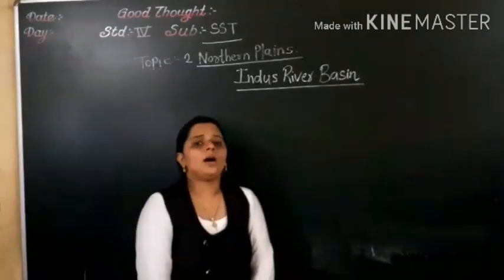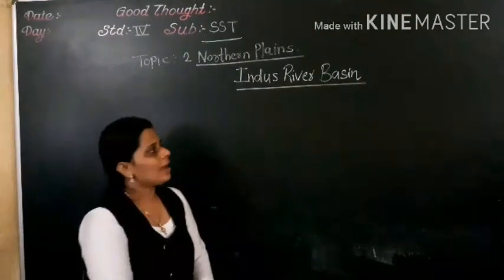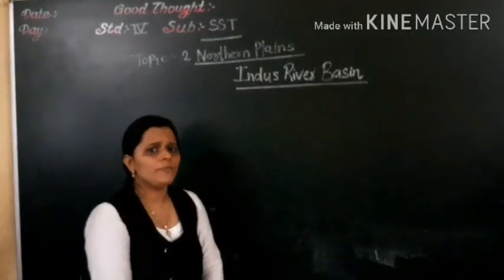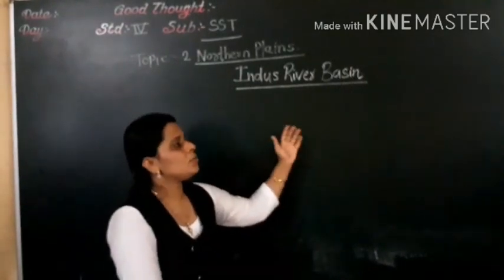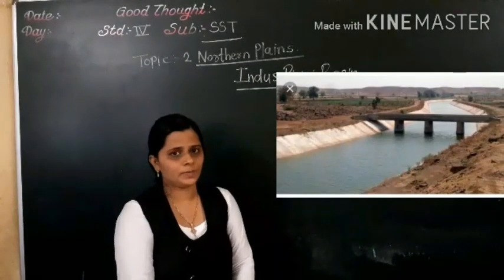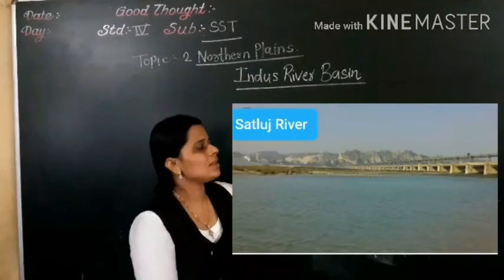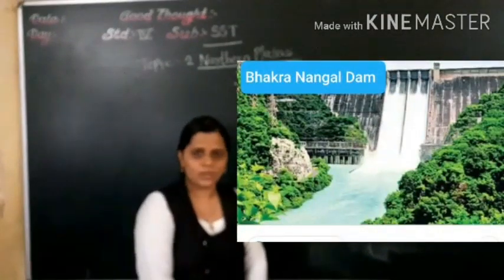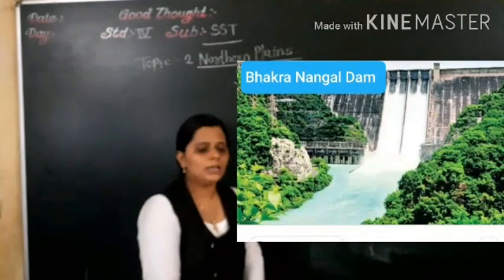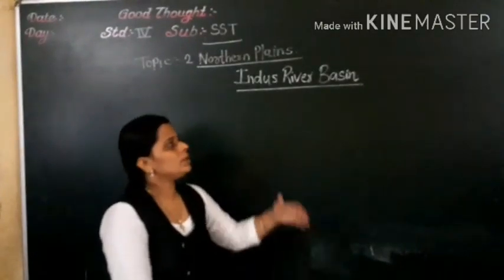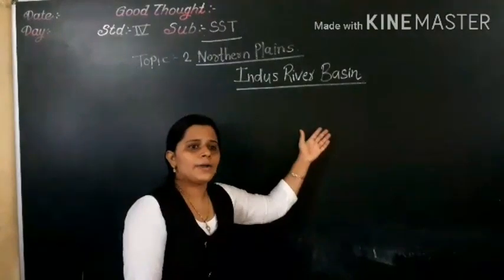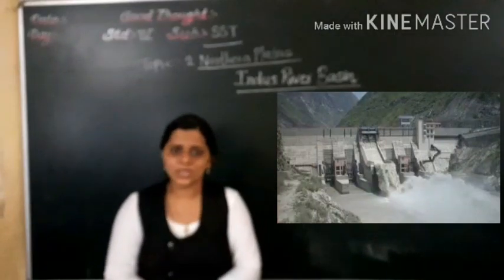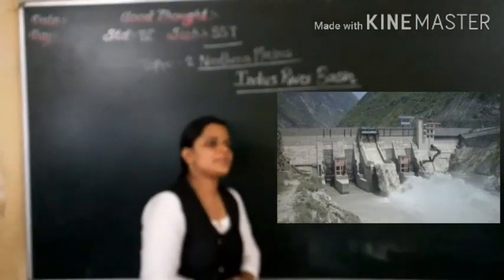Now let's talk about the occupation in that region. Agriculture is the main occupation. Since the amount of rainfall is very less, numerous irrigation channels are dug out from the river. On the Satluj river, there is the Bhakra Nangal dam, which is built on this river. Because of this dam, there is also hydroelectric power generation — because of water, electricity is produced. It is famous for hydroelectric power generation.